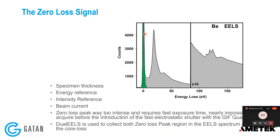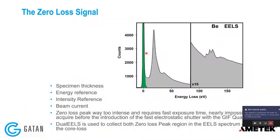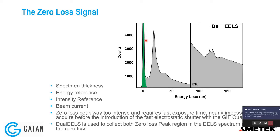The zero loss peak is very intense. Even though it may seem unimportant, you can extract information about specimen thickness and use it as an energy reference — for example, to measure the chemical shift of your material. You can also calibrate your camera based on zero loss peak intensity and extract information about beam current. The dual EELS capability developed with the Quantum gives you the ability to collect the zero loss peak as well as all other regions of the EELS spectrum under the same conditions.